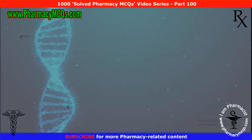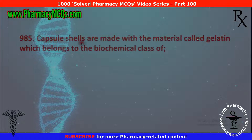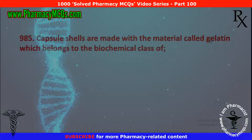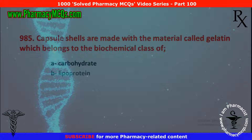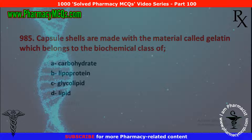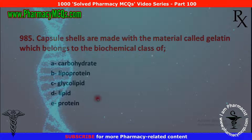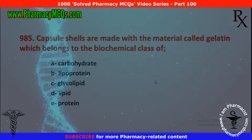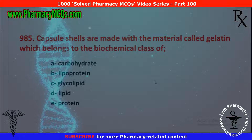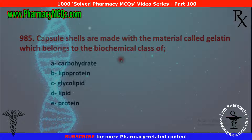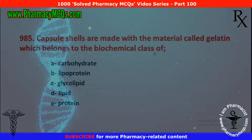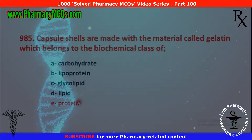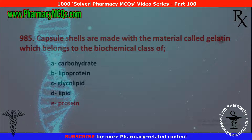Next MCQ: capsule shells are made with the material called gelatin, which belongs to the biochemical class of: carbohydrate, lipoprotein, glycolipid, lipid, or protein. Capsule shells — whether hard gelatin shells or soft gelatin shells — belong to the biochemical class of protein. Gelatin is actually a protein.